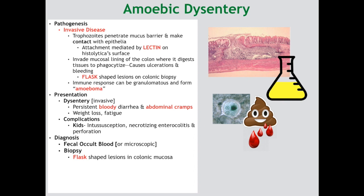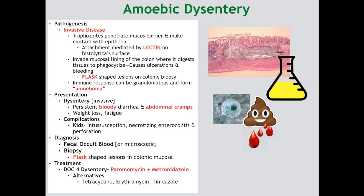For treatment of dysentery, the drug of choice is the same as for mild disease — paromomycin with metronidazole, with the same alternatives for metronidazole. If your patient is non-responsive, you can add emetine or dehydroemetine, which are your systemic agents. The differential diagnosis list should include other pathogens responsible for dysentery, such as Shigella and Balantidium coli.